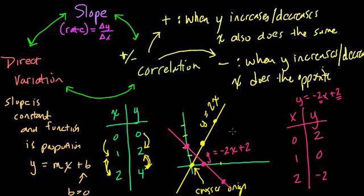It's negative because as y is going along here, it's decreasing: two to zero to negative two. But x is increasing. If you go the other way, if y is increasing from negative two to zero up to two, x would be decreasing. It's a negative correlation.